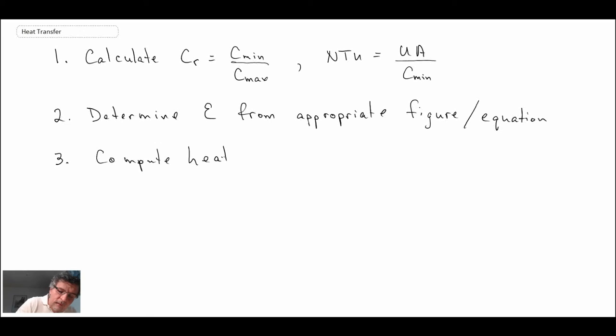Third step is you compute the heat transfer rate, and remember we multiply that by the maximum temperature difference, which is the hot temperature in minus the cold temperature in. With that, now that we've determined the heat transfer rate, then we can determine the outlet temperatures.